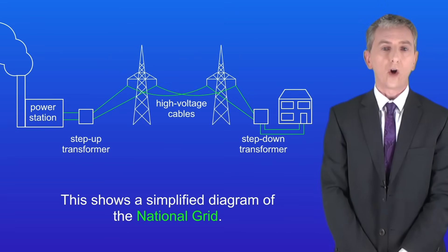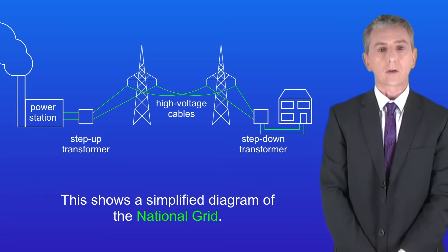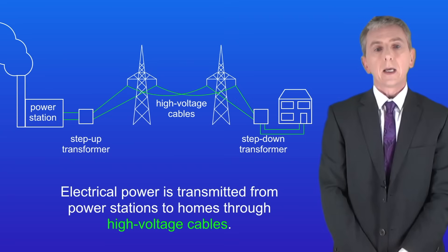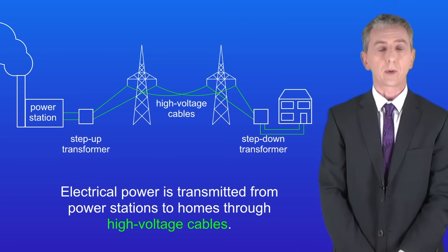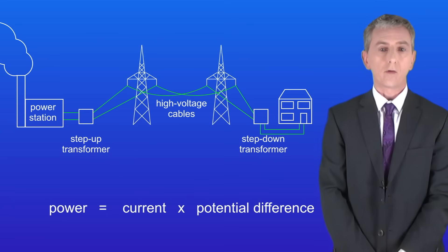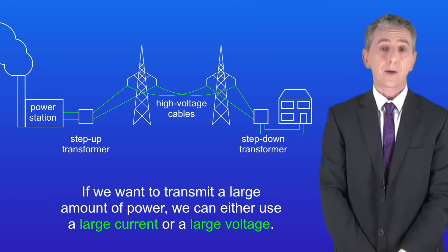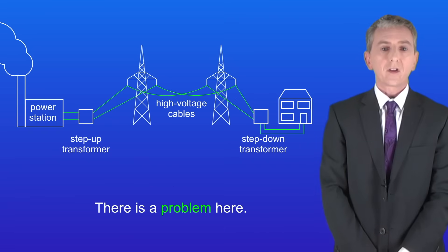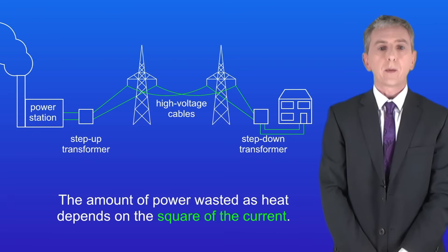We're going to finish by looking at how transformers are used in power transmission. Here is a simplified diagram of the national grid, which we looked at in the topic on electricity. Electrical power is transmitted from power stations to homes through high voltage cables. Power equals current multiplied by potential difference, so to transmit a large amount of power we can either use a large current or a large voltage. The problem is that power is wasted in the transmission cables as heat, and the amount of power wasted depends on the square of the current.